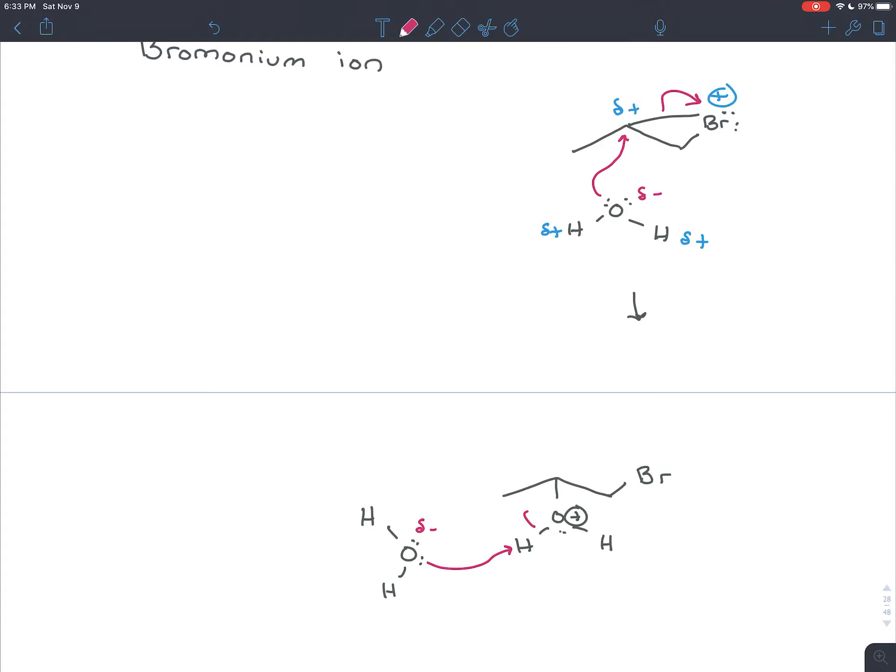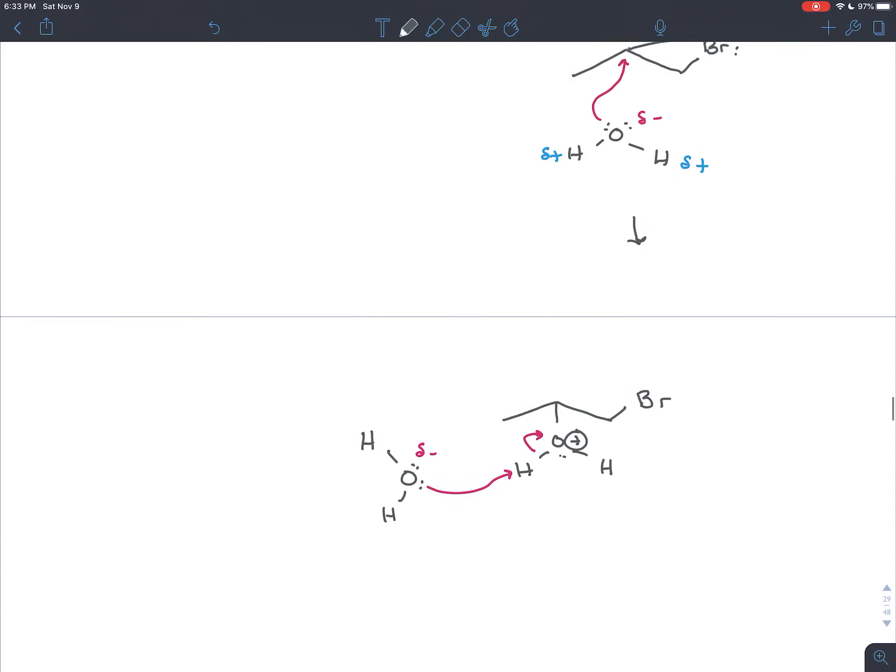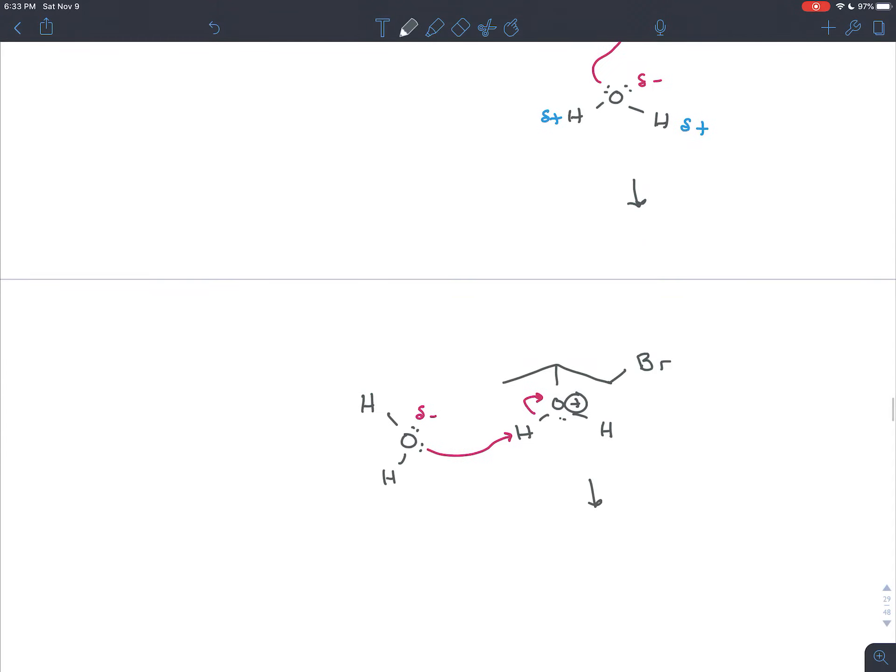So a base can come by, steal an H+, the electrons snap back onto the oxygen, and in the grand sweep of things what you end up with is a bromine and an OH attached to opposite sides of the double bond.